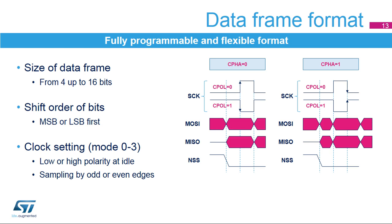Several parameters are used to set up the data format. Users can define the data frame size and the transmit order of the shift register. The clock can be set to one of the four basic configurations defined in the Motorola SPI specifications. The combination of two bits controls the polarity and phase of the clock signal. When the phase control bit is cleared, data bits are sampled on the odd clock edges and the even clock edges synchronize the shifting of the next bit onto the data line. This is the opposite when the phase control bit is set. The clock polarity bit defines the idle state of the clock signal and which clock edge is used for data sampling or shifting.